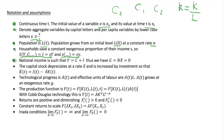We have national income accounting such that y equals c plus i. Normally we'd see y equals c plus i plus g plus net exports, but we assume there is no government spending and no net exports since we're in a closed economy. So we drop those terms and just have y equals c plus i.